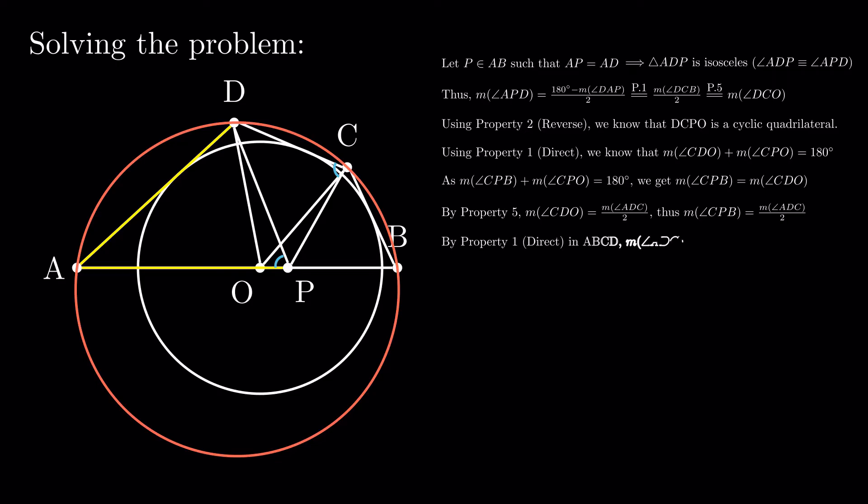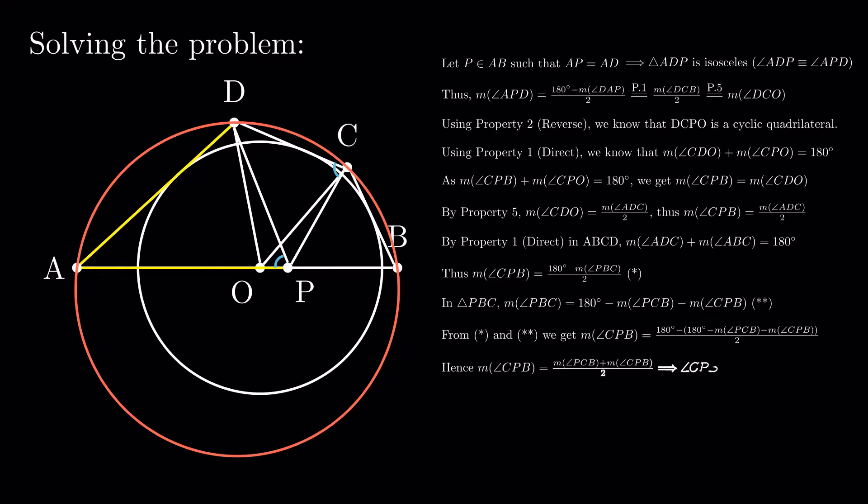By property 1 in quadrilateral ABCD, ADC plus ABC equals 180 degrees. Putting the two together, we get that CPB equals 180 degrees minus PBC divided by 2. Using the sum of angles in triangle PBC and the equation between CPB and PBC, we get that angles CPB and PBC are equal. Finally, this means that the triangle CPB is isosceles, so BC equals BP, and so AD plus BC equals AP plus BP, which is AB.